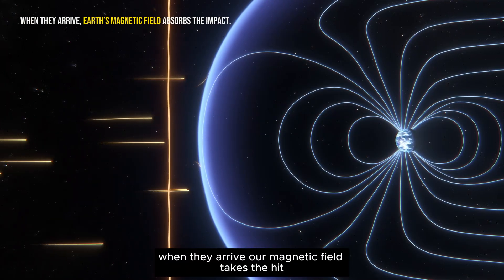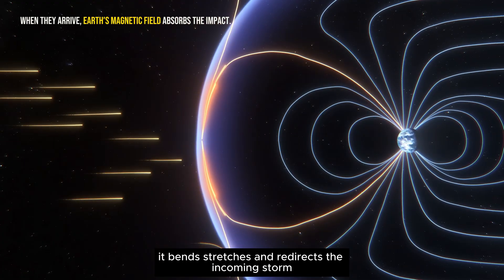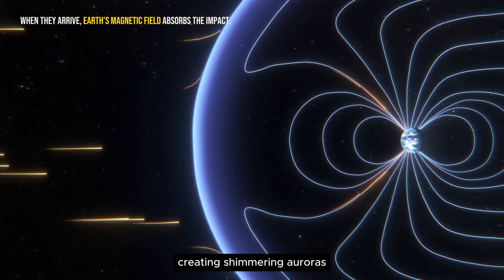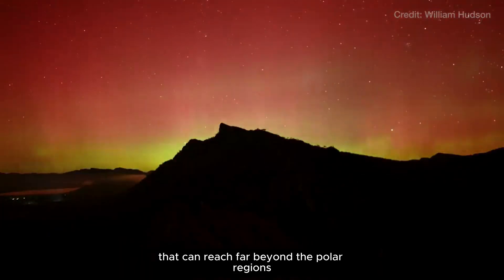When they arrive, our magnetic field takes the hit. It bends, stretches, and redirects the incoming storm, creating shimmering auroras that can reach far beyond the polar regions.